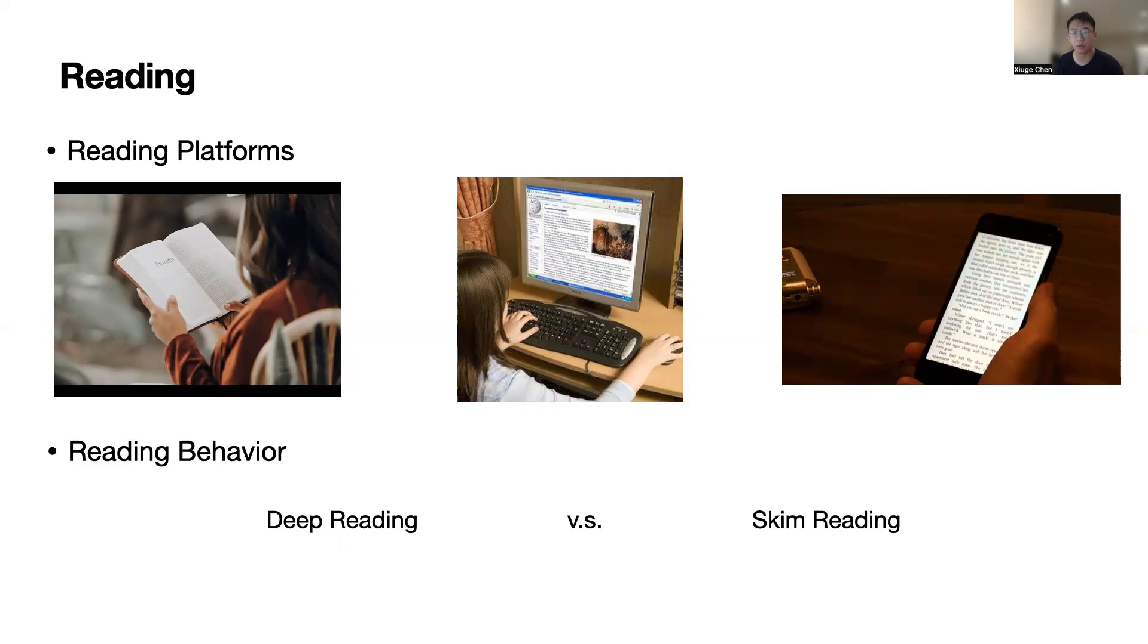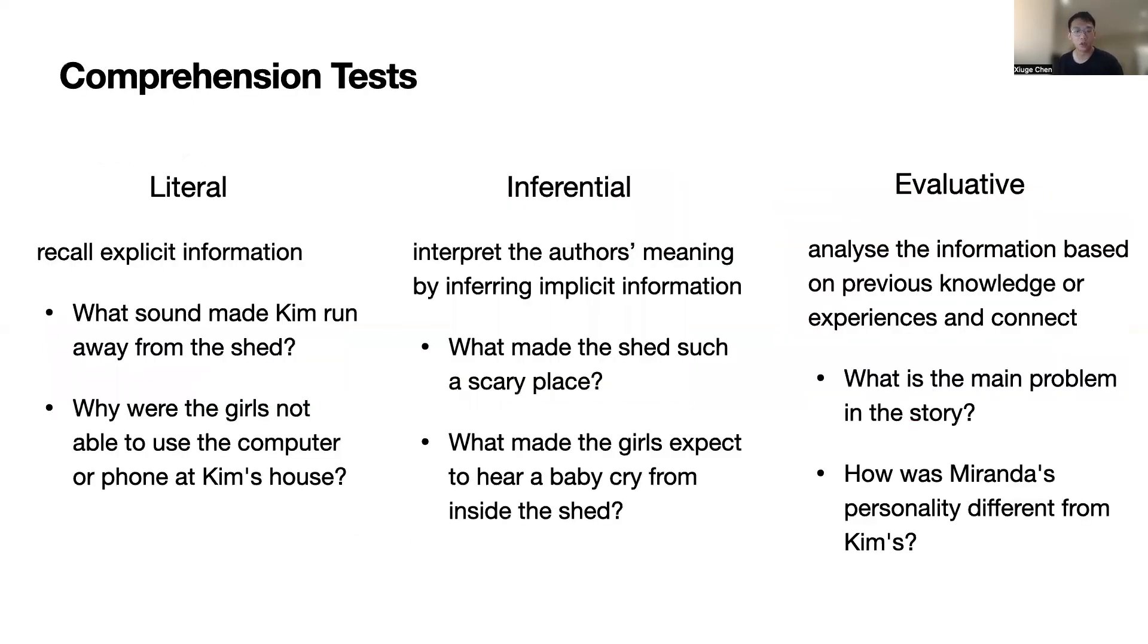To help better understand modern technologies' impact on people's reading behavior, we basically must be able to determine if a person is reading deeply or is just skimming. Traditionally, we can tell this by doing a comprehension test, where readers need to answer a set of questions after finishing reading.